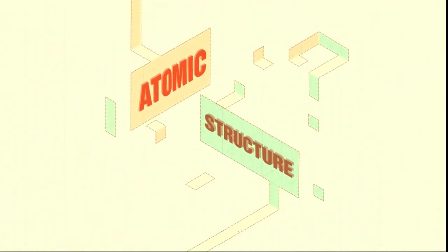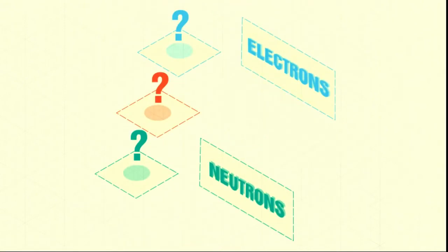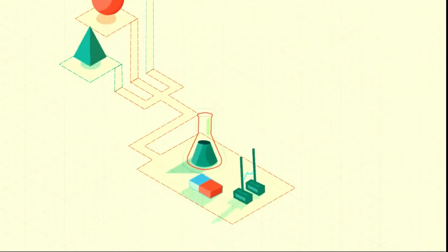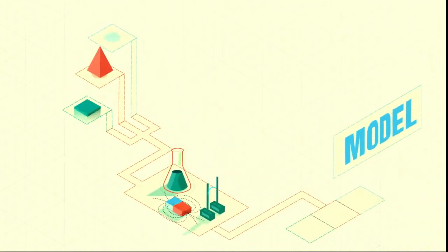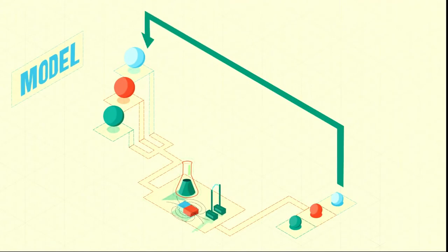Indulge me in a momentary tangent. How do we know about atomic structure? We can't see protons, neutrons, or electrons. So we do a bunch of experiments and develop a model for what we think is there. Then we do some more experiments and see if they agree with the model.